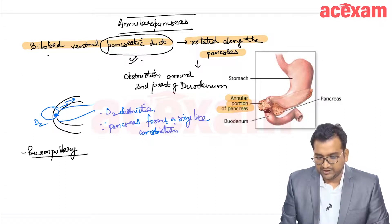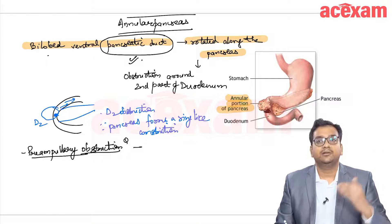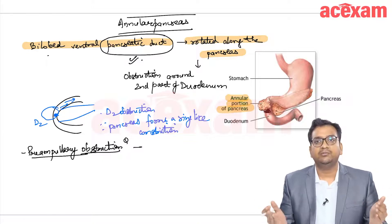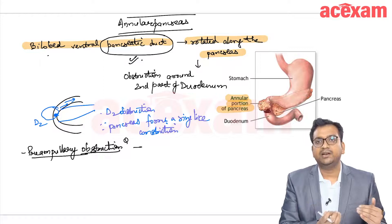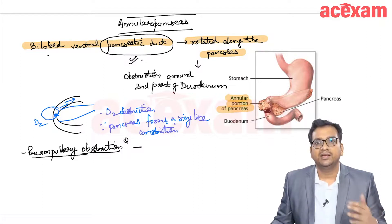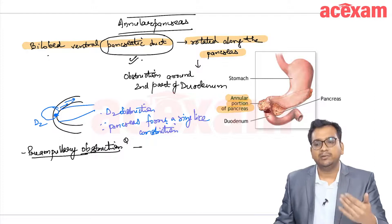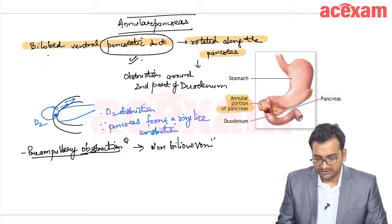There is a pre-ampullary obstruction. The significance of this pre-ampullary obstruction is that there is non-bilious vomiting. The bile goes through the bile duct into the ampulla and then into the duodenum. If the obstruction is above the ampulla, there will be non-bilious vomiting. So in annular pancreas, there is non-bilious vomiting.